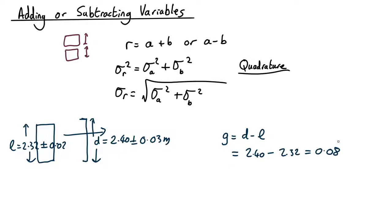So if everything was exactly in the middle of its uncertainty range, you'd have an 8 centimetre gap and it will get in with no trouble. But what's the uncertainty in this gap?